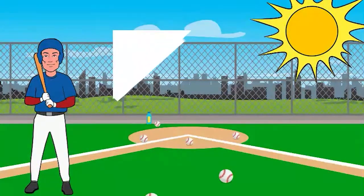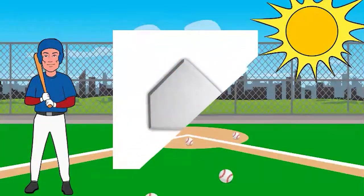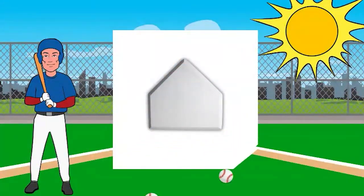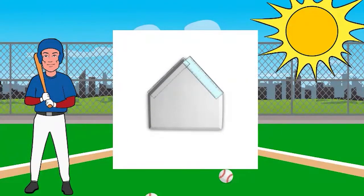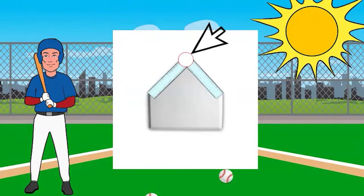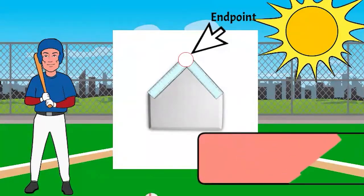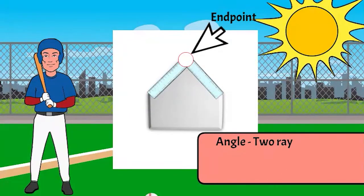When two rays or line segments connect at the same endpoint they form an angle. Take a look at home plate. There are two line segments connecting at a common endpoint to create the point of home plate. This connection creates an angle. Angles are two rays or line segments connected by a common endpoint.